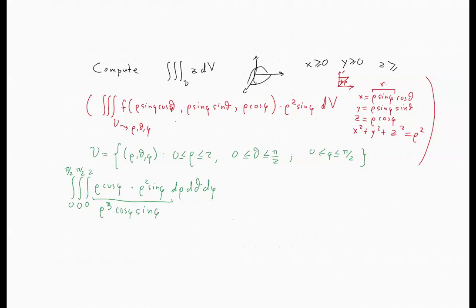So we can do the integration first with respect to rho. So that will give us rho to the fourth over 4 times cosine phi times sine phi. And we want to go from rho equals 0 to rho equals 2. And then we need to integrate with respect to theta from 0 to pi over 2, and finally with respect to phi, also from 0 to pi over 2.